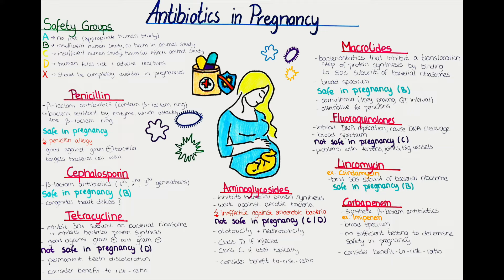Tetracyclines may cause permanent teeth discoloration. They are therefore given the D category, meaning that there are reports and data that prove human fetal risk and adverse reactions. If we can, we want to stay away from tetracyclines for pregnant patients and for young children. However, the potential benefit may warrant usage despite potential risks — benefit-to-risk ratio needs to be considered.